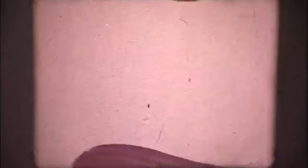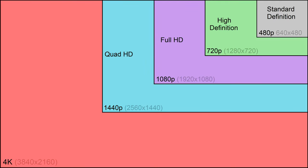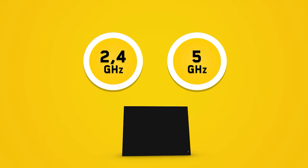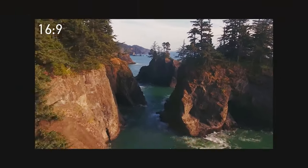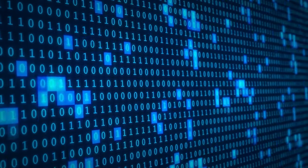Socket voltage, frame rate, screen resolution, Wi-Fi ranges, Bluetooth and much more — everything has been defined, standardized and accepted by default for a long time. But how were all these values chosen? They can be anything, but for some reason they chose only one. Of course there are good reasons for this, and the most interesting, unexpected and confusing ones will be discussed now.